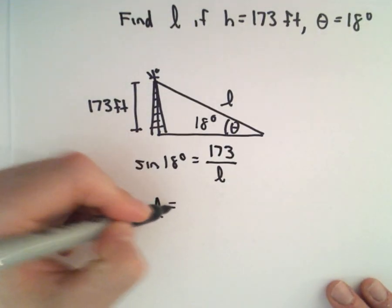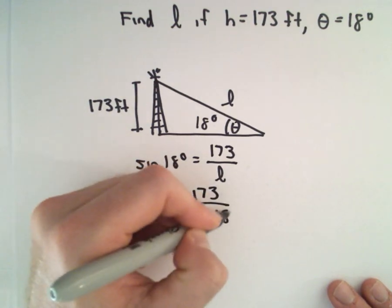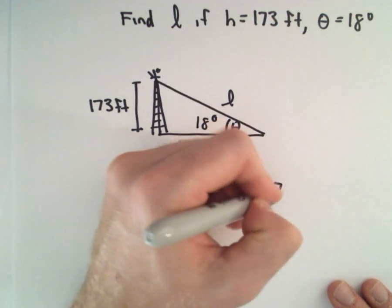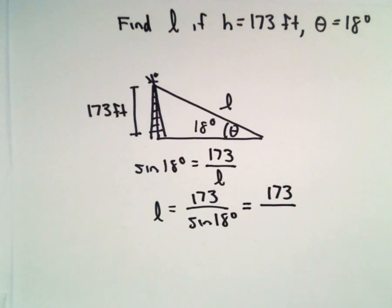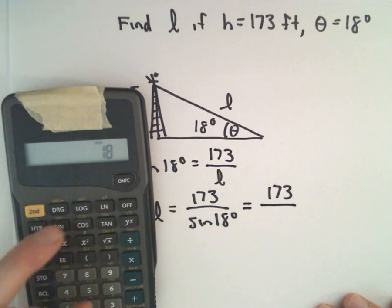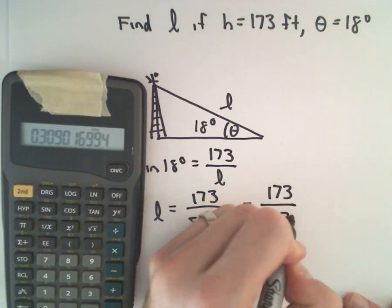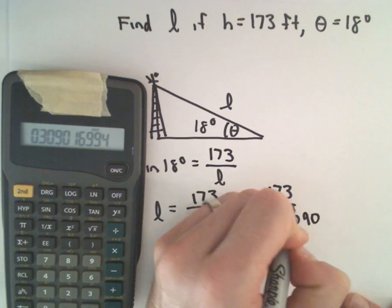We can multiply by L and we can divide by sine of 18 degrees. And then it's just a matter of using a calculator to get the value. So sine of 18 degrees, I'm getting that to be 0.3090 roughly.